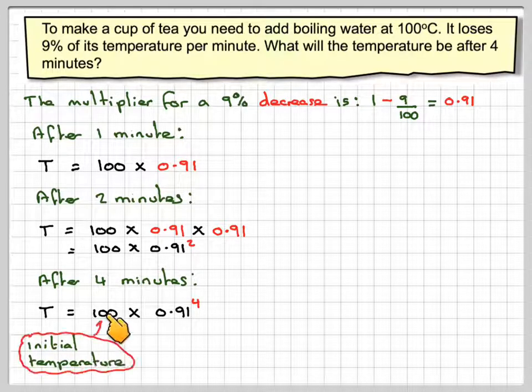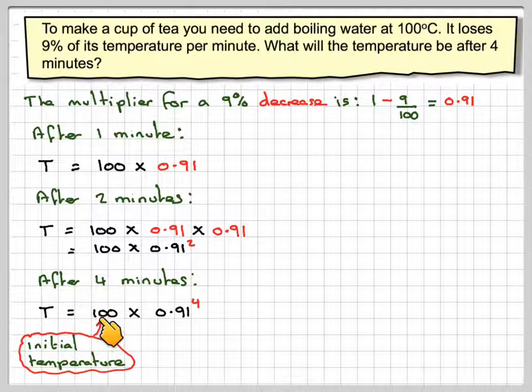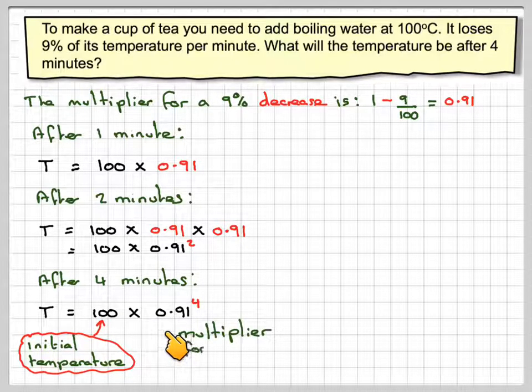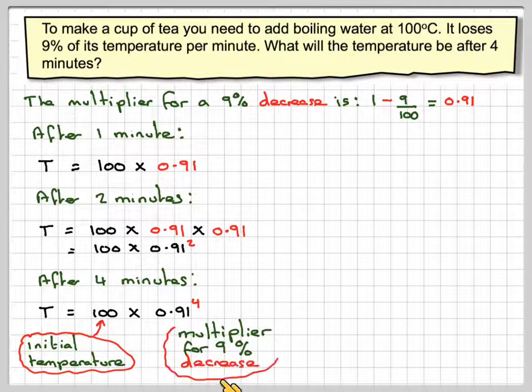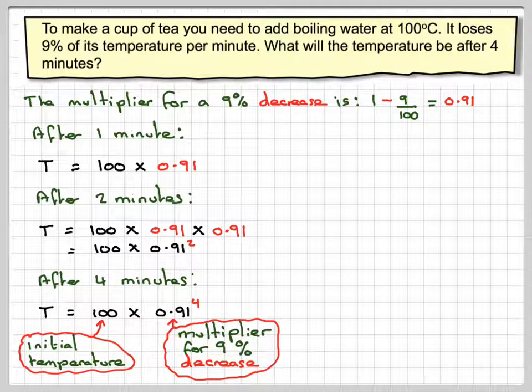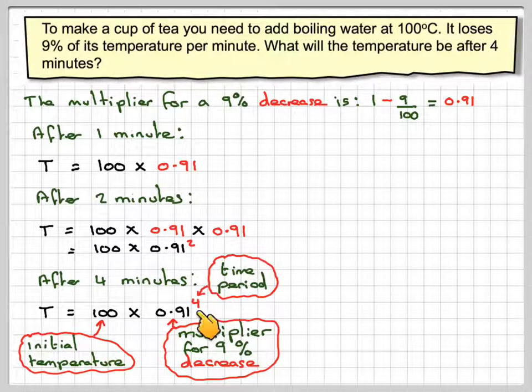And therefore where this is the initial temperature, the initial quantity in this case was temperature, this is the multiplier for a 9% decrease. And the four, the power there, stands for the time period. The time period in this case is minutes.